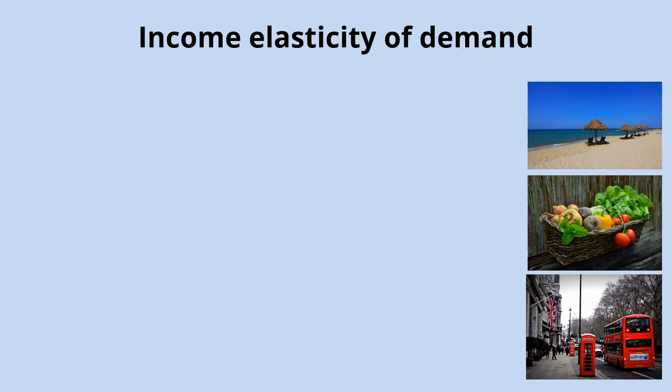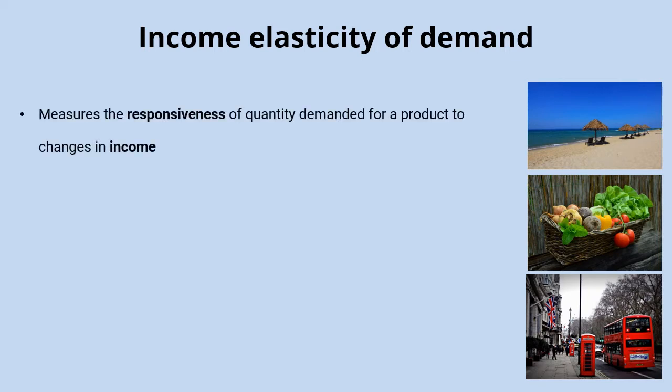Income elasticity of demand measures the responsiveness of quantity demanded for a product to changes in income. When people's income changes, you'd expect the demand for the goods they're consuming to change as well. Most goods we call normal goods — goods for which income going up increases demand, as you'd expect for most goods.